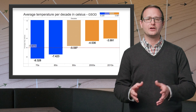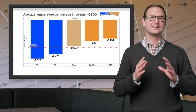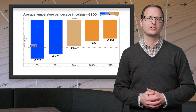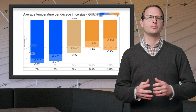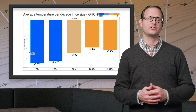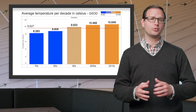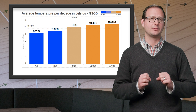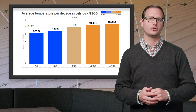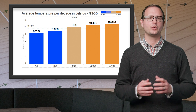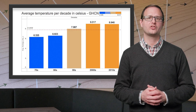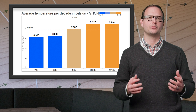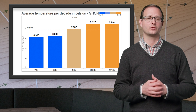Stations in the Arctic Circle show a significant increase in average temperature each decade: 1.23 degrees Celsius per decade for GSOD and 0.67 degrees Celsius for GHCN. The northern temperate zone includes the largest number of stations and represents the most highly populated zone. Both the GSOD and GHCN data sets show a gradual increase in average temperature, with 0.68 and 0.65 degree increases respectively.